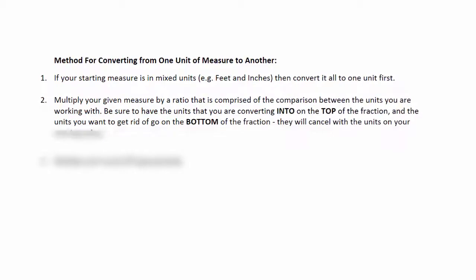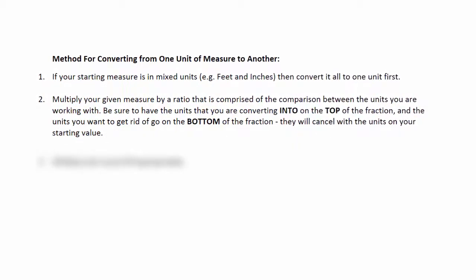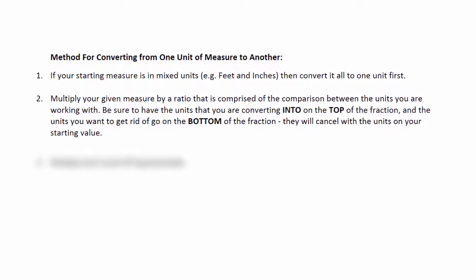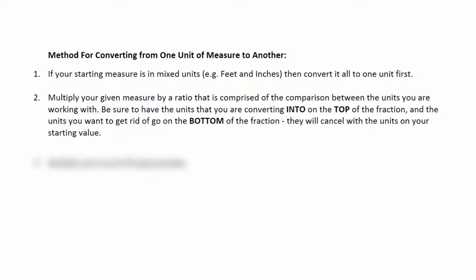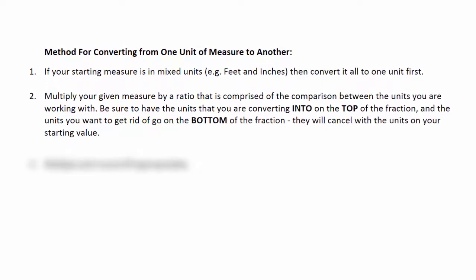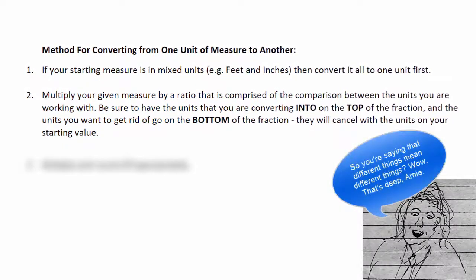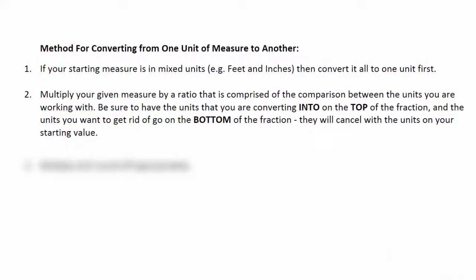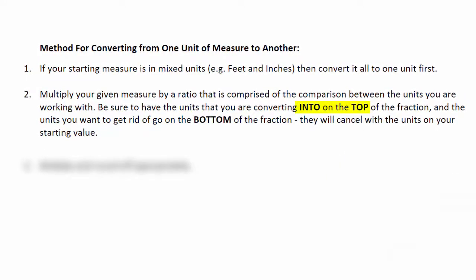Step 2. Multiply your given measurement by a ratio that's comprised of the comparison between the units you're working with. If you want to go from feet to meters, use a ratio that compares feet with meters. Don't use something that does miles to kilometers, because that's different things. Now be sure that the ratio you're using has the units that you want to convert into on the top of the fraction, and the units that you want to get rid of go in the bottom of the fraction. They will cancel with the units on your starting value. And at this point in time, multiply your first measurement by that ratio. There might be some division in there, so do that too. But multiply and divide appropriately, and then round off appropriately.